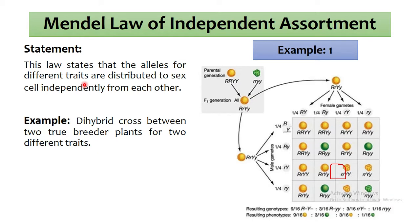The Mendel's Law of Independent Assortment says that alleles for different traits are distributed to sex cells independently from each other. Two different alleles, characters, and genes — the gametes are formed independently. In order to prove the law of independent assortment, the most important thing is that two characters are crossed at the same time.